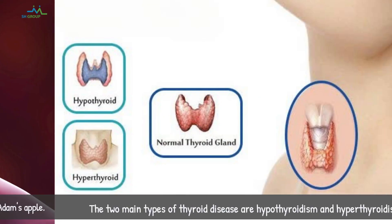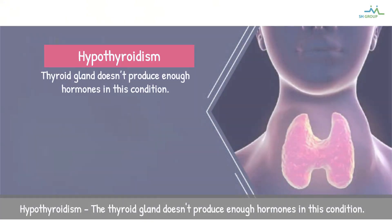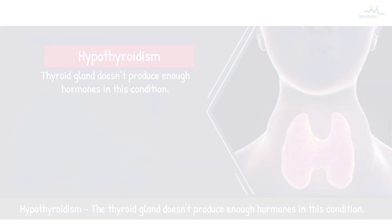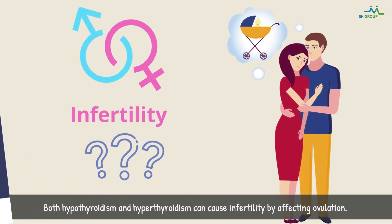The two main types of thyroid disease are hypothyroidism and hyperthyroidism. Hypothyroidism is when the thyroid gland doesn't produce enough hormones. Hyperthyroidism is the overproduction of thyroid hormone. Both hypothyroidism and hyperthyroidism can cause infertility by affecting ovulation.